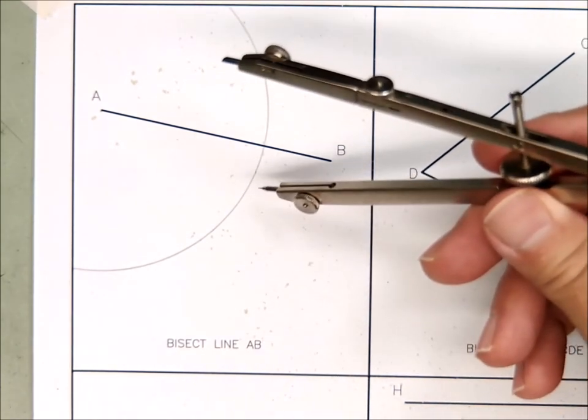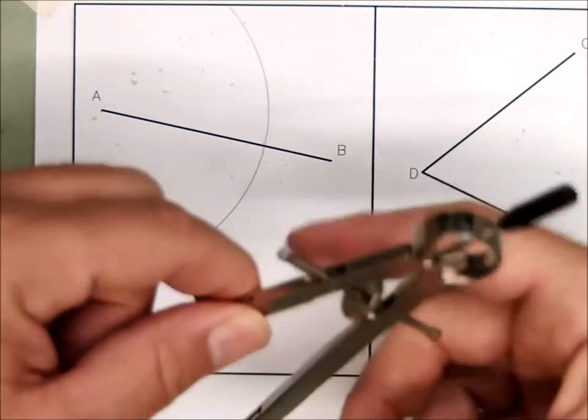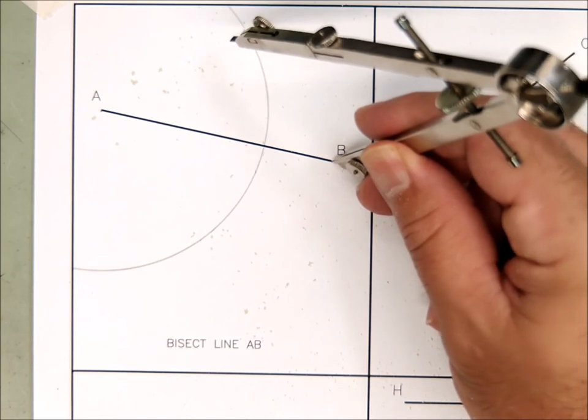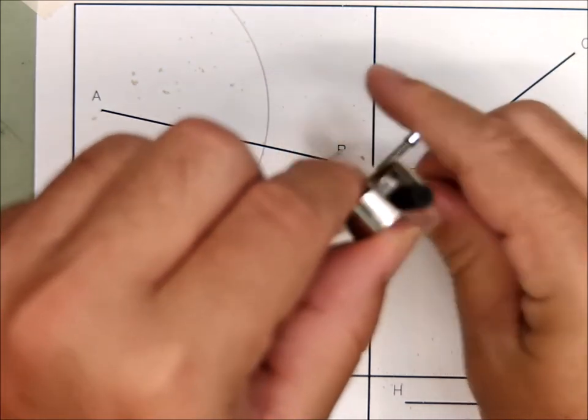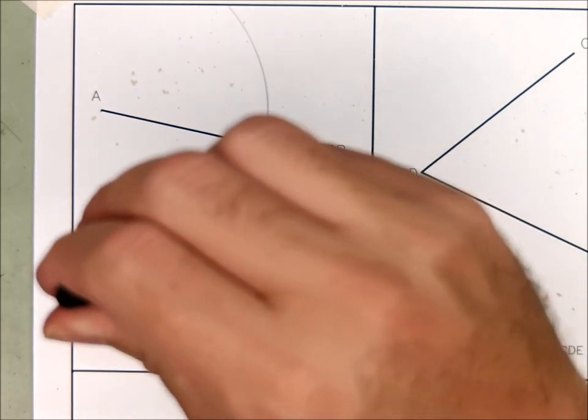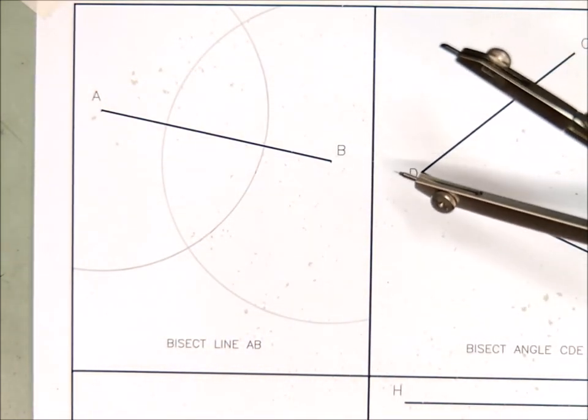And then what I'm going to do is I'm going to swing an arc. And then without changing the setting, without adjusting the wheel or changing anything, I'm going to take the point and put it down at the end of the line where the endpoint is, point B. And I'm going to do the same thing. I'm going to swing an arc from point B.